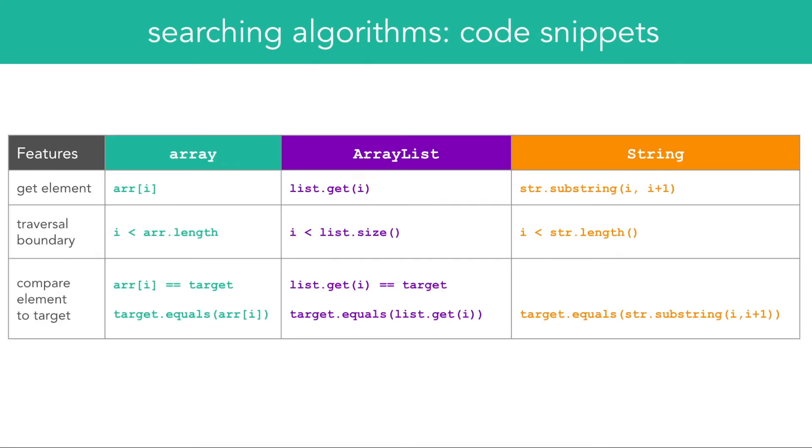Pause to observe the main differences when searching for specific elements within arrays, array lists and strings. The equal equal operator is used when comparing primitive values. The dot equals is used when comparing values of object reference types.